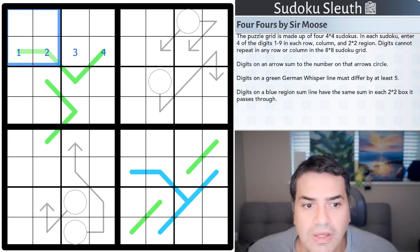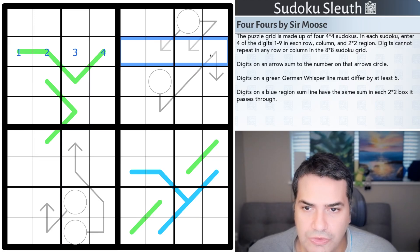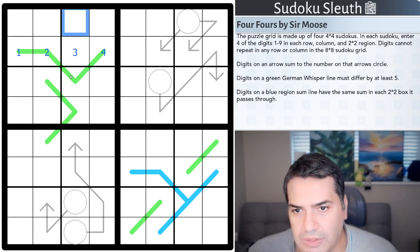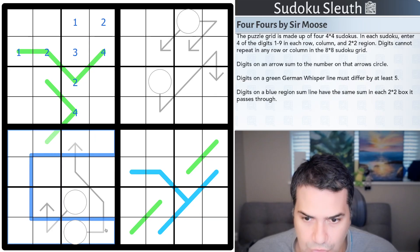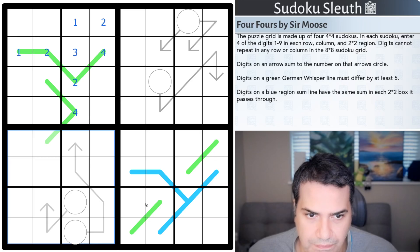Okay, what else does it say? Digits cannot repeat in any row or column in the 8x8 Sudoku grid. So, if I picked 1, 2, 3, 4 in here, I can't pick them in there because they're in the same row. And, presumably, because of the rule set, this would have to be... I'm just going to make it up for a second. If this is 1, 3, you know, this could be a 4, this could be a 2. And, clearly, because I've used it in the column, I couldn't use it in this 2x2 grid either.